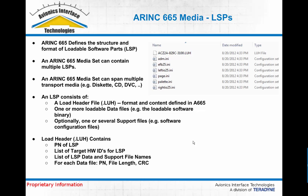ARINC-665 is the specification that defines the structure and contents of loadable software parts and ARINC media sets. A media set is, think of it logically as a CD or a file directory that can contain one or more loadable software parts. If it's a physical, movable piece of media, like a CD or a diskette, the media set can span multiple transport media.